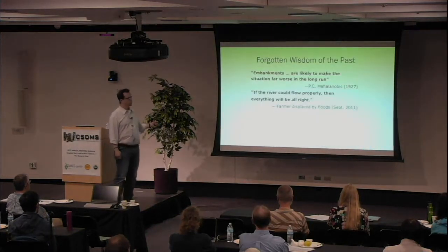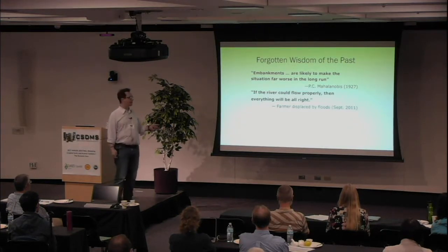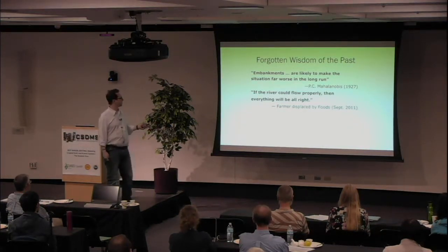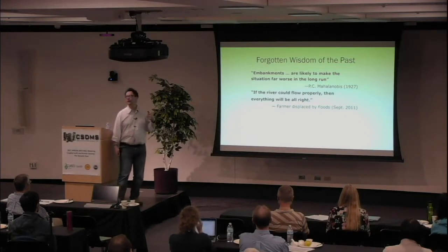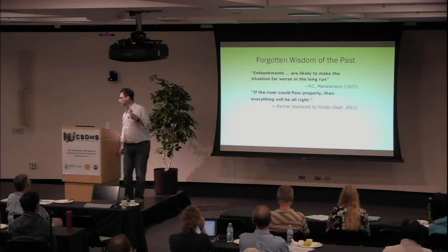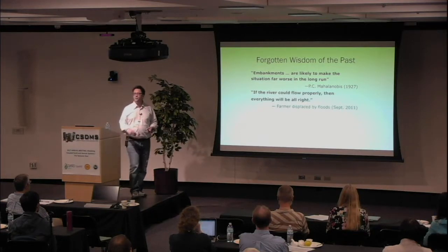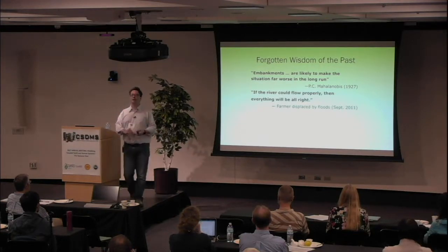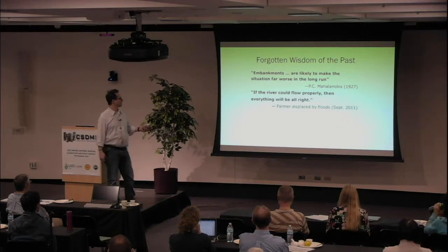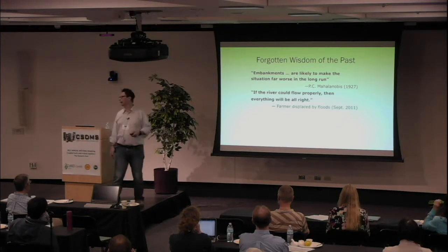People warned about this back in the 1920s and 30s. An engineer called Mahalanobis warned that embankments for flood control are likely to make the situation worse in the long run. And a farmer interviewed by our research team in 2011 said that if the river could flow properly, then everything will be all right.